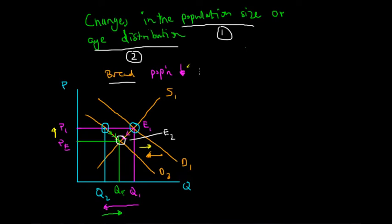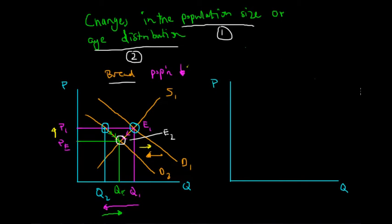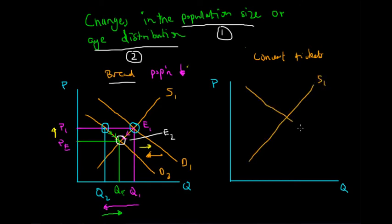Now let's look at the second example — how a change in age distribution might affect the market for concert tickets, which could very well appear as an exam example. The underlying assumption is that generally, the older we get, the less likely we are to attend concerts. Assuming the supply of concert tickets is generally quite elastic and the demand curve is downward sloping, the market initially determines the price at P1 and quantity demanded at Q1 — the original equilibrium point E1.